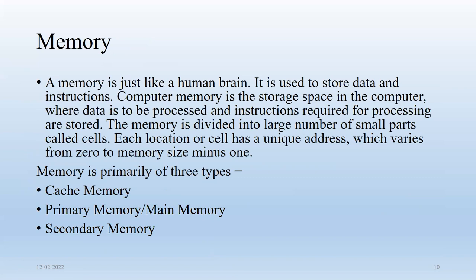Next is memory. Memory is just like the human brain — it is used to store data and instructions, just as we store things in our brain. Computer memory is the storage space where data to be processed and instructions required for processing are stored. Memory is divided into a large number of small parts called cells, and each cell has a unique address which varies from zero to total size minus one.